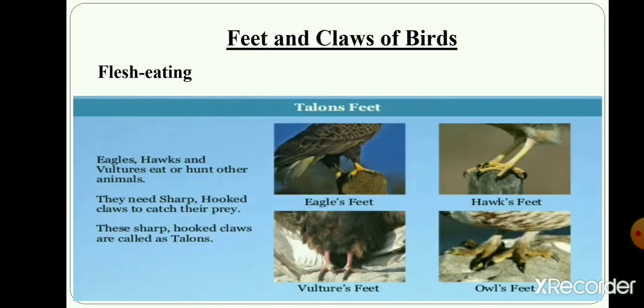Flesh-eating birds. Eagles, hawks and vultures eat or hunt other animals. They need sharp, hooked claws to catch their prey. Their sharp, hooked claws are called talons. They use their talons to grip and carry small animals.